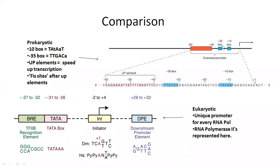We call the whole promoter region from minus-10 to minus-35, and the region from minus-40 to minus-60 is called the UP elements. These are the two extended promoter regions. Our gene starts at this point, which is upstream, so we denote the region from the start of the gene. The promoter sequence is upstream of the gene start.